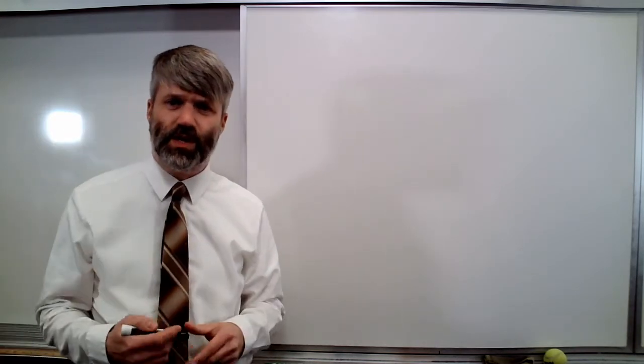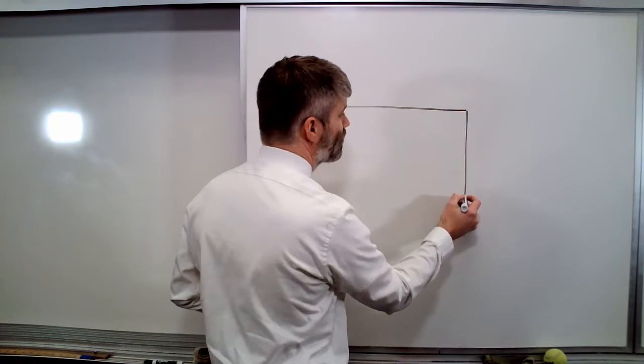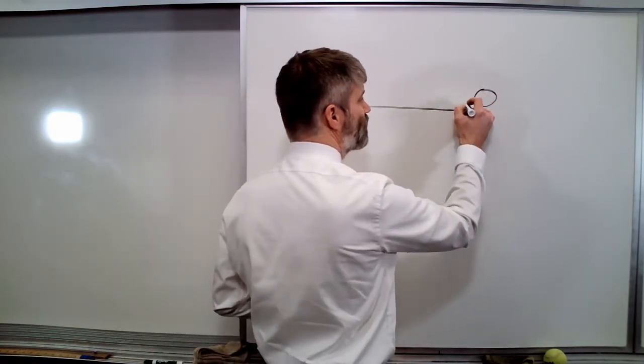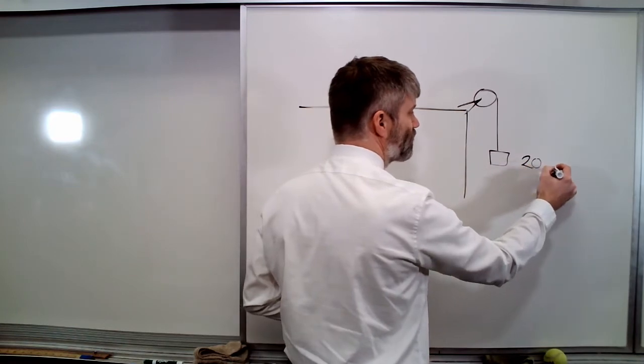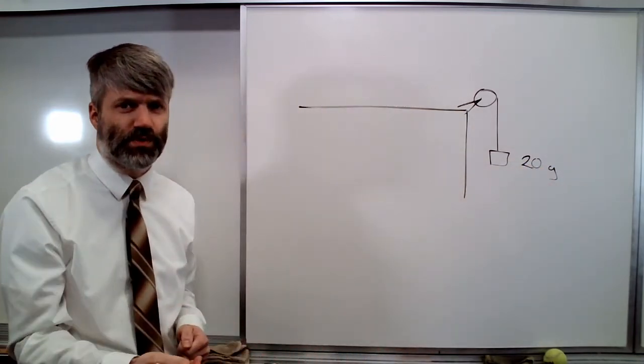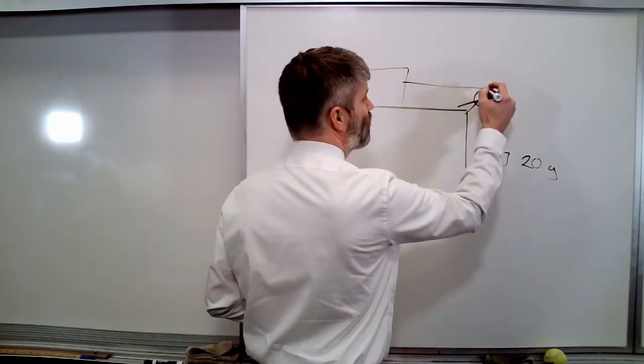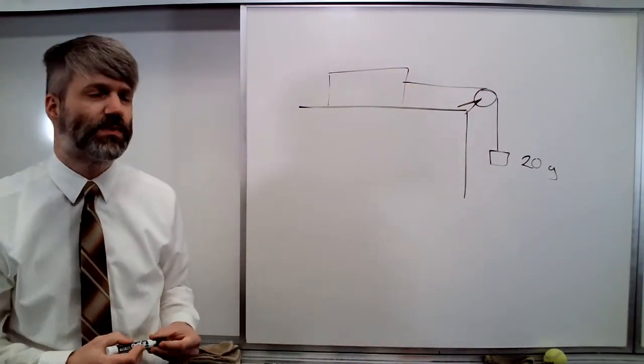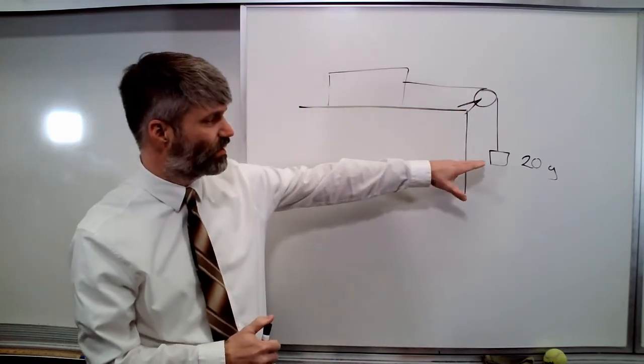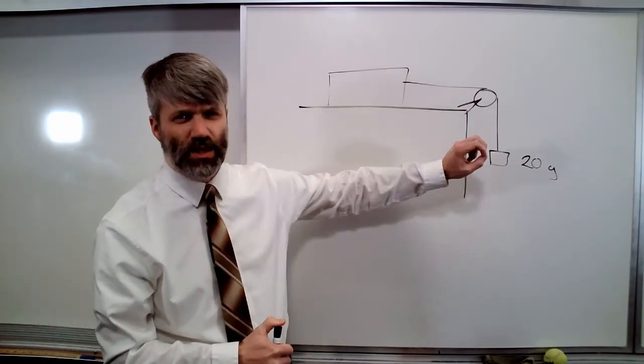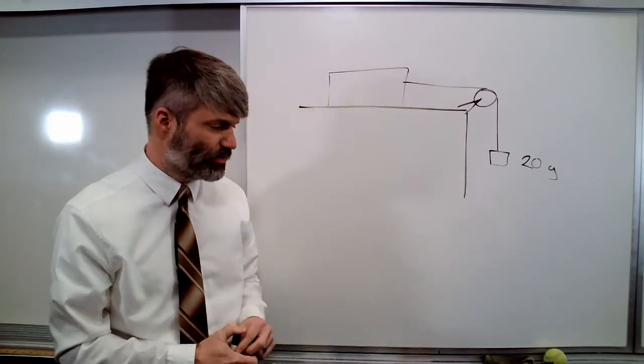Remember when we were looking at the modified Atwood machine for the first time, and we had the air track with a very, very small mass hanging off the end? It was 20 grams, 0.02 kilograms, and it was pulling something that was about 300 kilograms. Several times the mass of what we've got here.